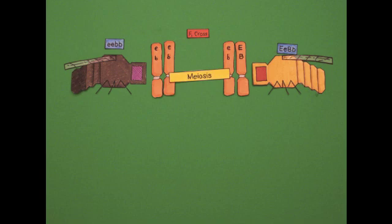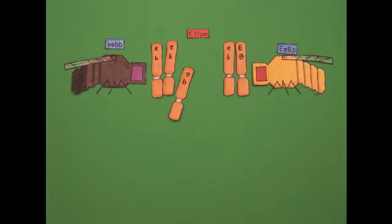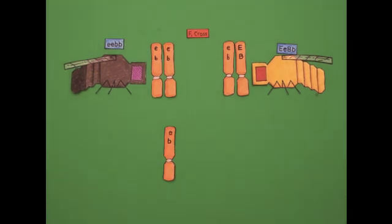In this scenario, the homozygous F1 parent can only donate recessive traits to its offspring. That way, any differences we see in the F2 generation will be the result of meiotic events from the heterozygous parent.